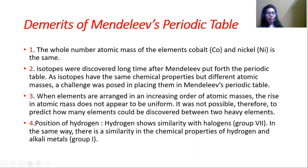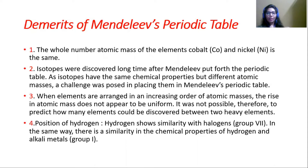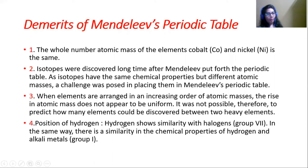The third demerit of Mendeleev's periodic table is that when elements are arranged in an increasing order of atomic masses, the rise in atomic mass does not appear to be uniform. It was therefore not possible to predict how many elements could be discovered between two heavy elements, or what their accurate atomic masses should be and where to place them in the table. This was also a significant challenge.